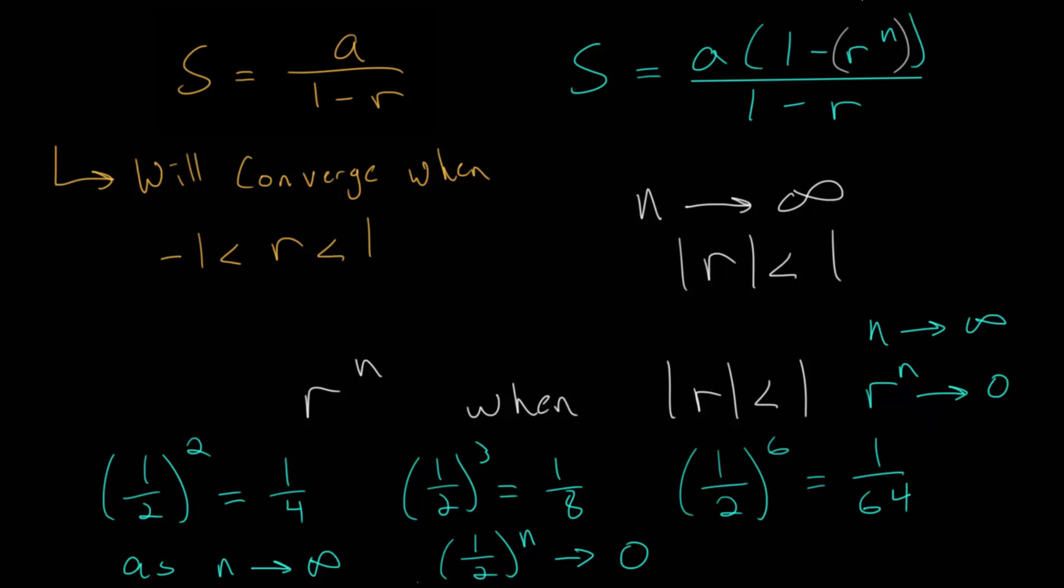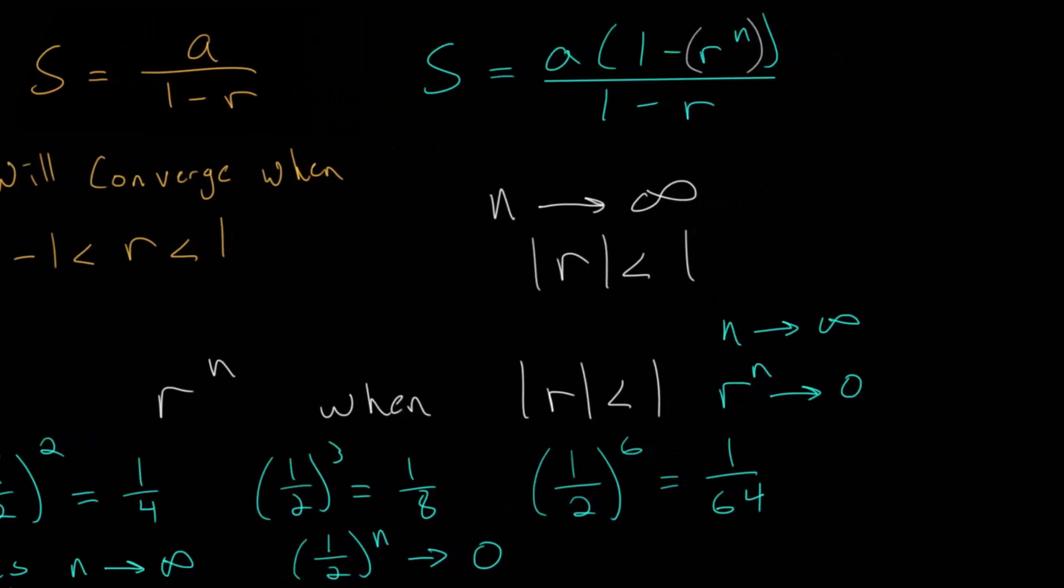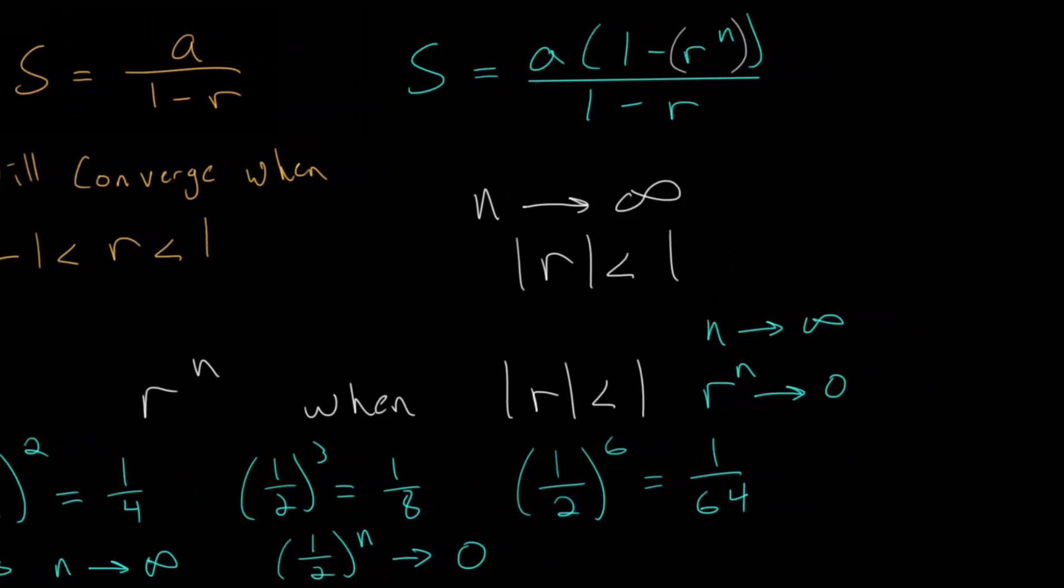And because of that, in our formula here, let's make just a bit more room. We'll keep the original infinite formula in the picture. Basically, what happens is that this goes away. This is just equal to zero. And so you get a times 1 minus 0 over 1 minus r. But this is just 1, and so you just get a up top. So a over 1 minus r.